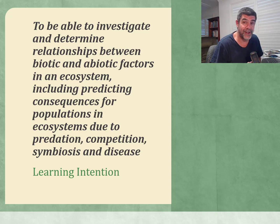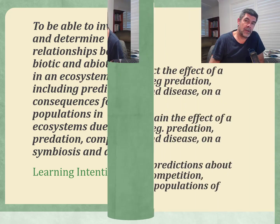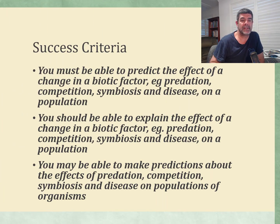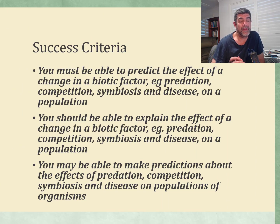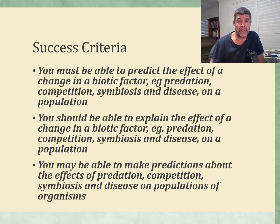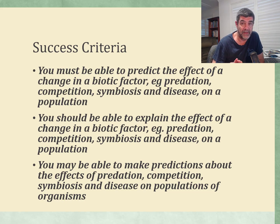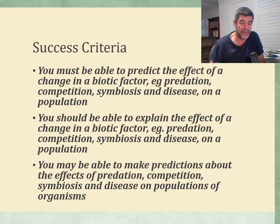That's an awful lot to try and get through, so let's see how we go. When trying to assess your level of understanding, it's always useful to have a couple of markers for your success. At a minimum, it would be good if you can predict the effect of a change in a biotic factor such as predation on a population. You can do this simply using a food chain or a food web, and by identifying a change in one species, you can look at how that affects other species.